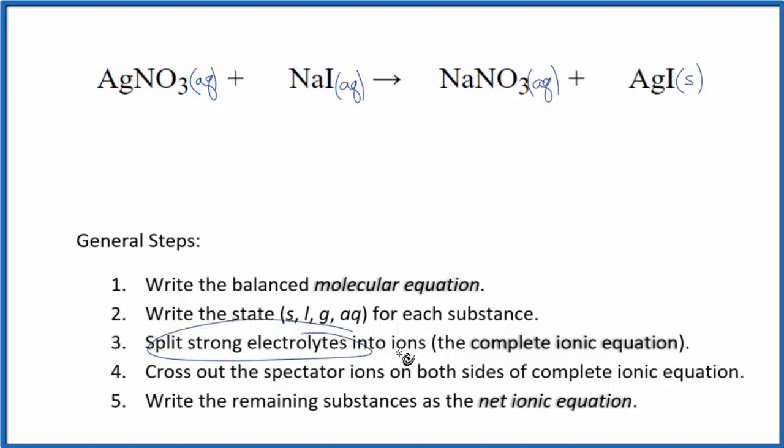Now, we can split the strong electrolytes into ions. And this will give us the complete ionic equation. So, silver, it's a transition metal, but it's kind of an exception. It always has a 1 plus charge. This whole nitrate ion has a 1 minus. Good one to remember. So, we have Ag plus, and I won't write aqueous after each one. Let's do that at the end. Plus the nitrate ion, NO3 minus.